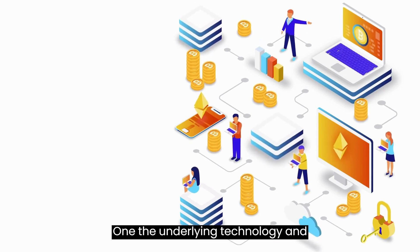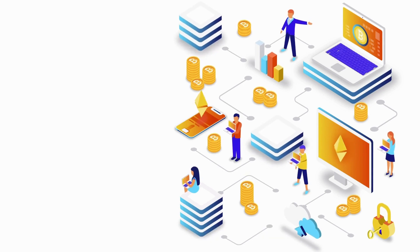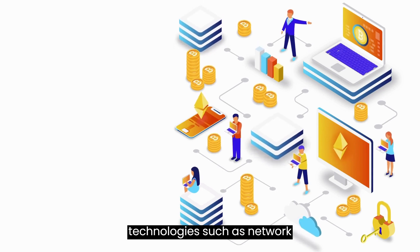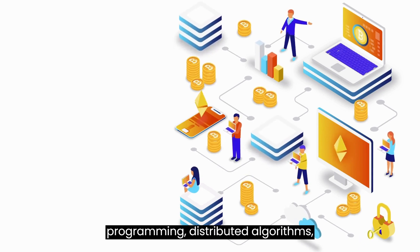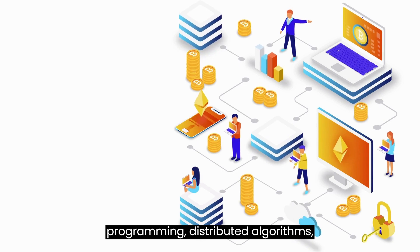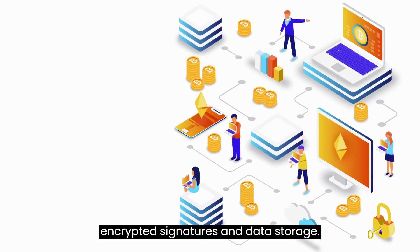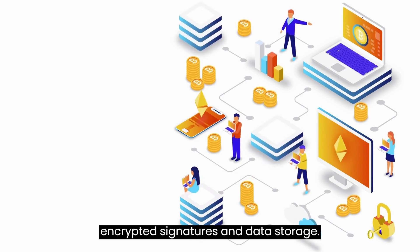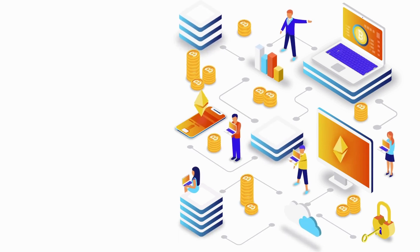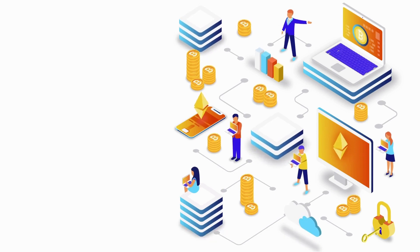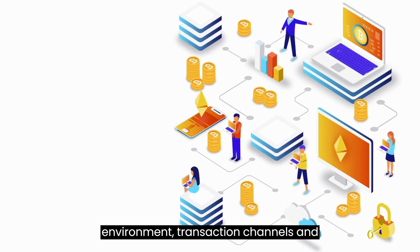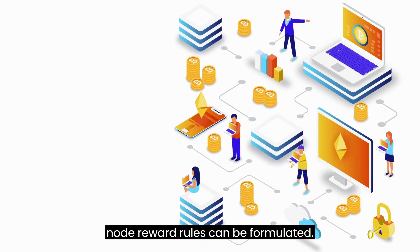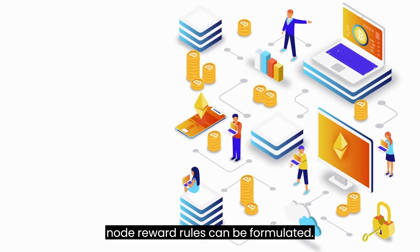The underlying technology and infrastructure layer mainly includes technologies such as network programming, distributed algorithms, encrypted signatures, and data storage. Through these technologies, the network environment, transaction channels, and node reward rules can be formulated.